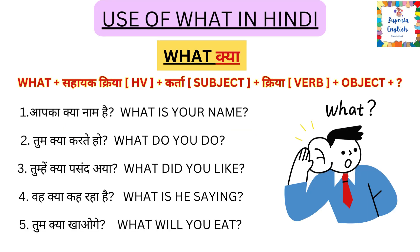Let's start with WH word. Our first word is 'what.' 'What' means 'kya' in Hindi. The sentence structure is: first you will use the WH word 'what,' then helping verb, then subject, then verb, then object. Let's start with our first sentence: What is your name?